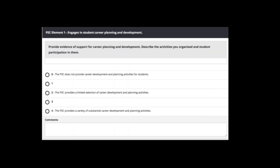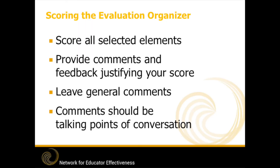The counselor evaluation for the counselor will appear. To score, click the radial button next to the correct score for each completed element of the counselor organizer. For any and all completed elements, also leave comments concerning the specific element in the comments box. Those comments should justify the score that you provided for each element. Do not score elements that were not completed. If so desired, you may also leave overall comments about the evaluation organizer in the general comments section near the bottom of the screen.